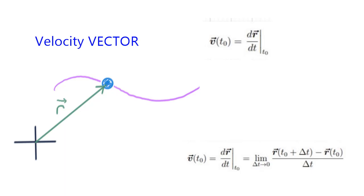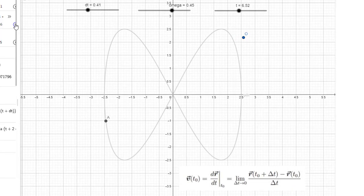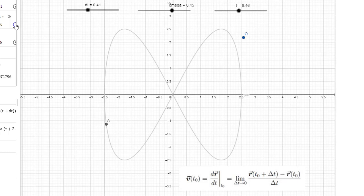I'm going to assume that you've seen that previous video, so if things move a little too quickly, you might want to go back to that previous one to review. Here's an object moving around a curvy path. Technically speaking, it's a Lissajous figure — kind of like a figure eight turned on its side.